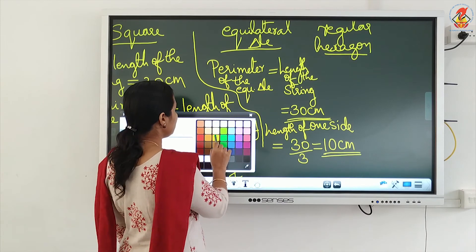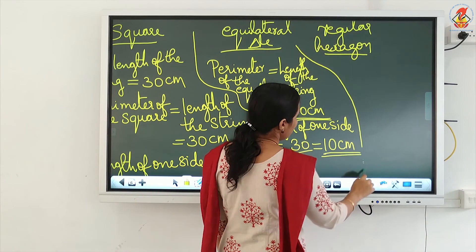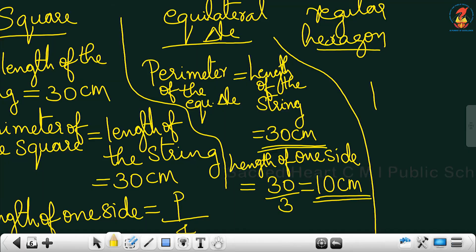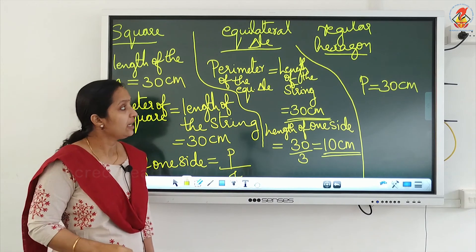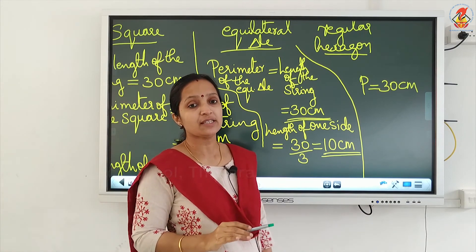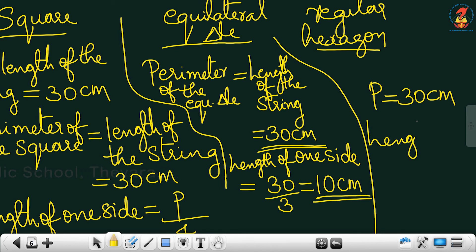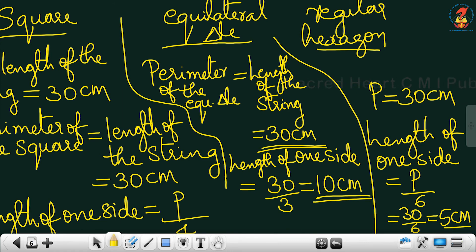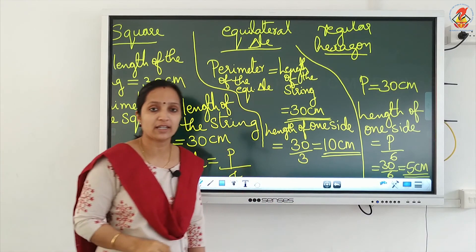Next, using the same string we form a regular hexagon. The perimeter of the regular hexagon equals the length of the string, which is 30 centimeter. A hexagon has 6 sides, and if it is regular, all 6 sides are equal. So the length of one side is perimeter divided by 6, that means 30 divided by 6, which gives 5 centimeter.